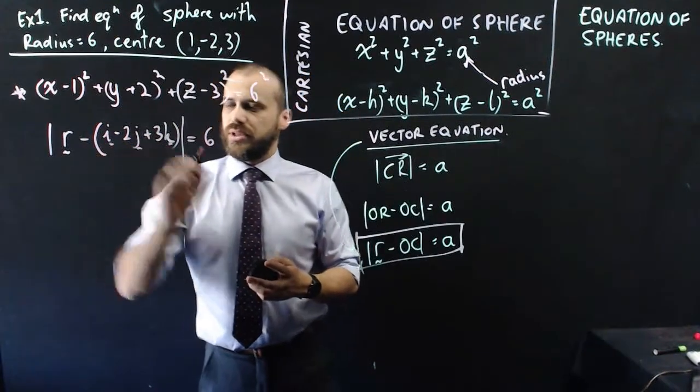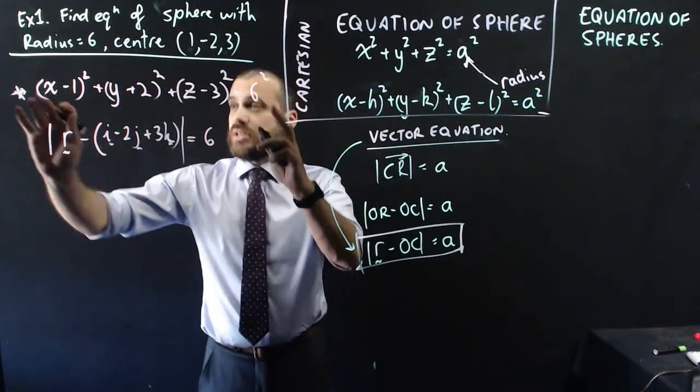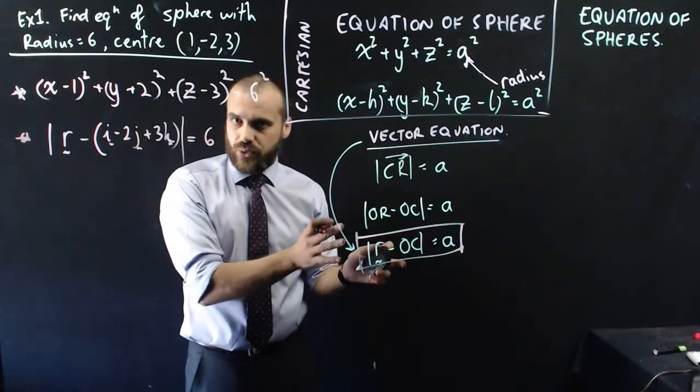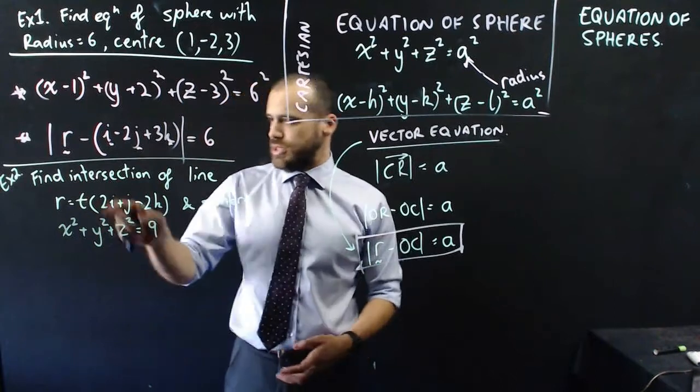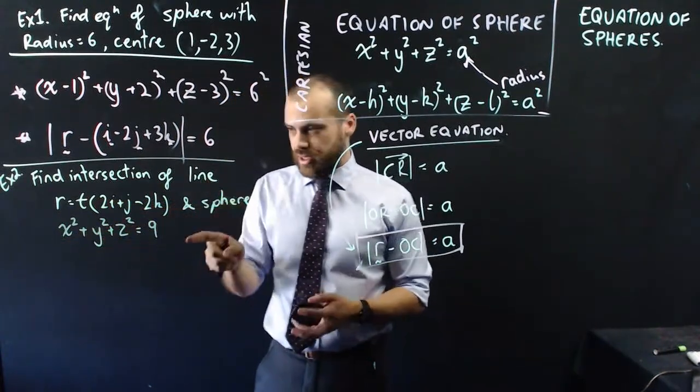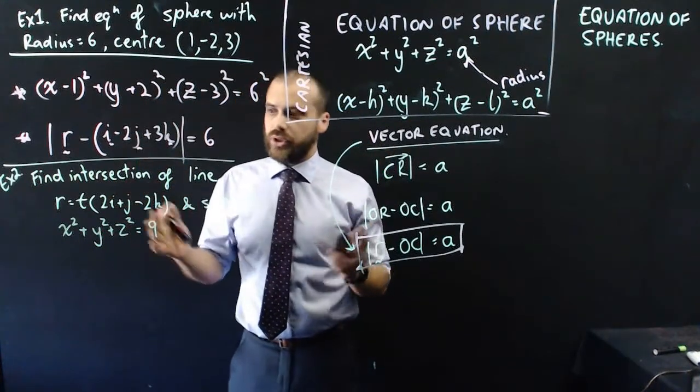I can put in my little thingies there. So that's finding the equation of sphere, both in Cartesian form and in vector form. One more example here. Find the intersection of the line r equals t(2i plus j minus 2k) and the sphere, this thing here. It seems like a bit wild, but it's actually relatively straightforward.